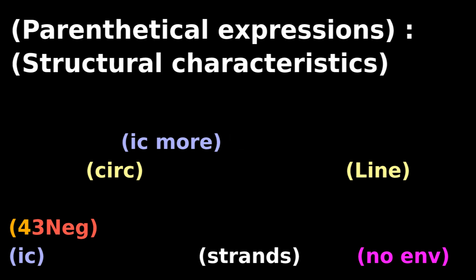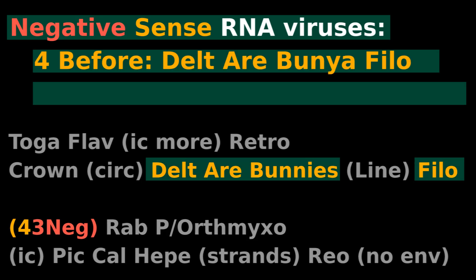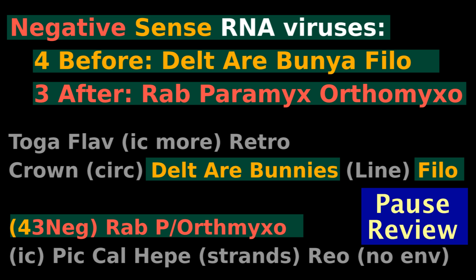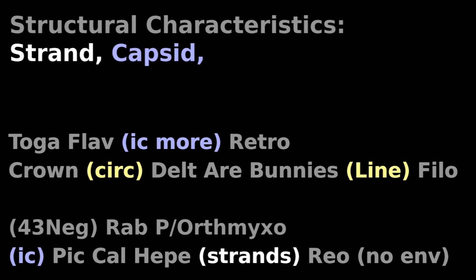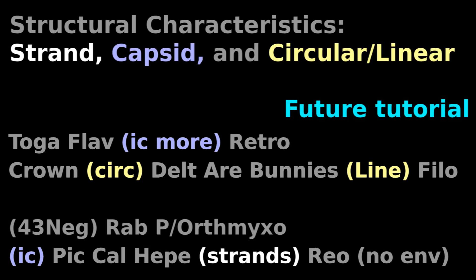Other parenthetical expressions remind you of other structural characteristics. For example, 'Four Three Neg' means that the negative-sense RNA viruses are the four viruses before Delta R Bunny and the three viruses after Rab — Paramyxo and Orthomyxo. These Four Three are the negative-strand RNA viruses. Pause and review. More structural characteristics such as strand, capsid, and circular or linear will be covered in a future tutorial.